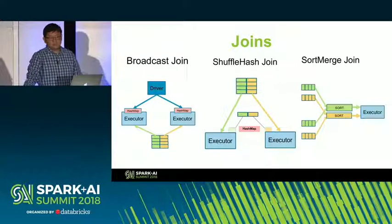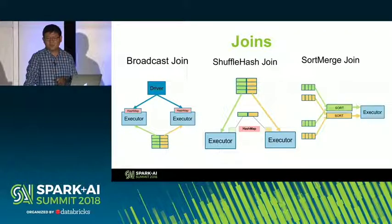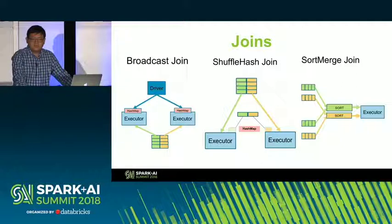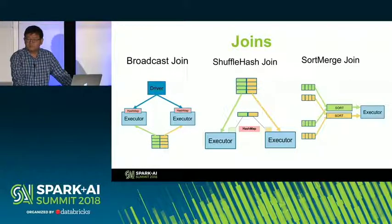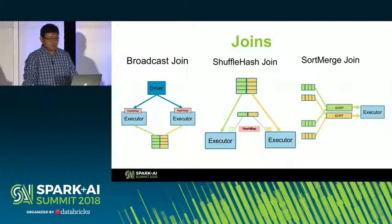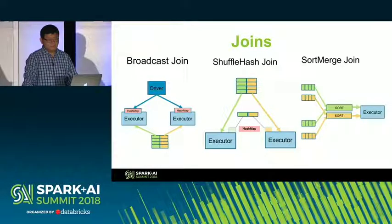In shuffle hash join, with A join B where B is small but not small enough to fit entirely into memory — each partition of B is small enough to fit into memory. The reducer fetches each partition, builds a hash map on each partition of B, then does the matching and hash lookup on each row of table A and emits results. In this case, we have shuffle but no sort. The third one is sort merge join, where both A and B are large and even each partition cannot fit into memory. We have to do both shuffling and sorting. It is the most heavyweight option.